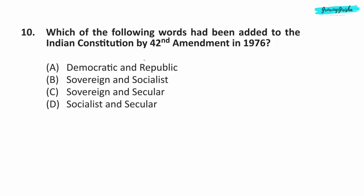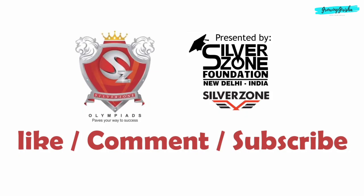Question 10. Which of the following words had been added to the Indian Constitution by the 42nd Amendment Act in 1976? Option D — Socialist and Secular. Thank you for watching. Like, Comment, Subscribe. See you in another video. Bye-bye.